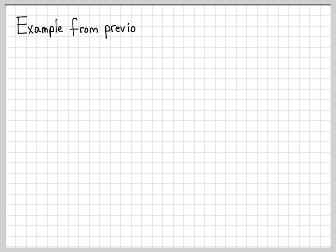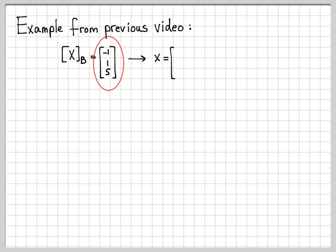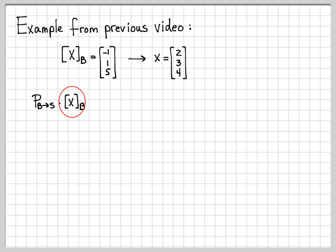Let's do a little example from the previous video. We had a vector x written with respect to the basis B with coordinates (-1, 1, 5) in the B basis, and we figured out that in terms of the standard basis, the vector x had representation (2, 3, 4). What we should be able to do now is use this change of coordinates matrix to do the exact same computation. If I multiply this matrix by the vector in the B basis, I should end up with the vector in the standard basis.